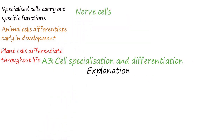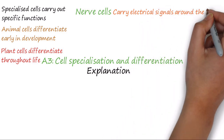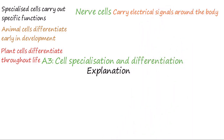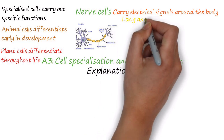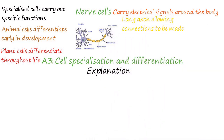Nerve cells carry an electrical signal around the body. The axon is the part of the cell which carries the impulse. These are very long, allowing connections to be made between different parts of the body. The cell body of the nerve cell contains dendrites, allowing connections to also be made with other nerve cells.